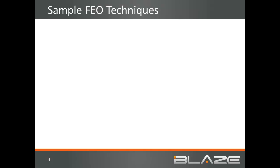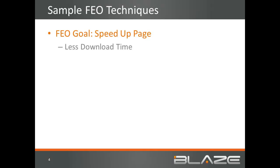FEO techniques vary greatly, but most of them aim to reduce upload time, download time, and browser processing time. To speed up downloads, FEO attempts to reduce the amount of data being sent over the wire. This can be done by compressing data, removing unused data, avoiding redundant downloads, and more. Using a content delivery network helps make the remaining bytes get to the user faster. Reducing upload time is done in ways such as caching, guiding the browser to request more files in parallel, and combining files together to reduce the total number of requests.